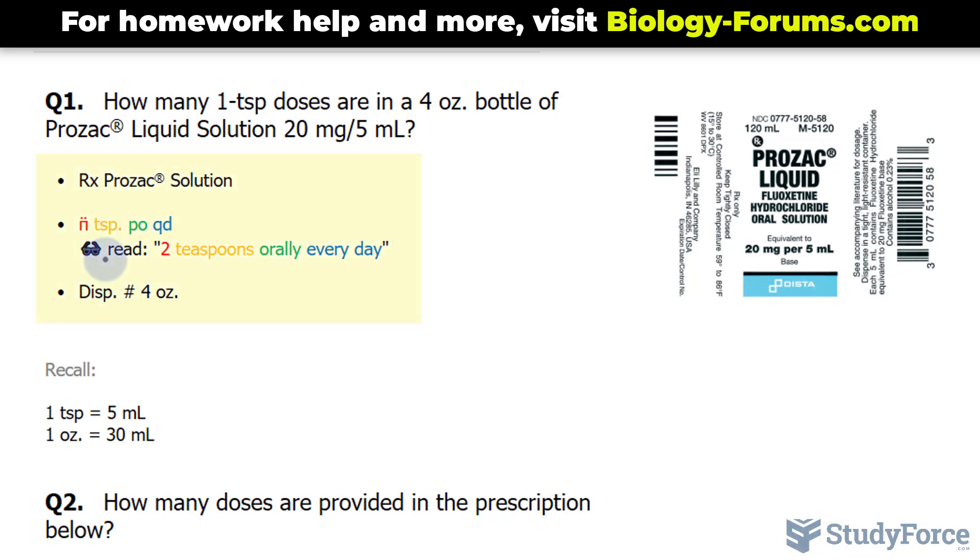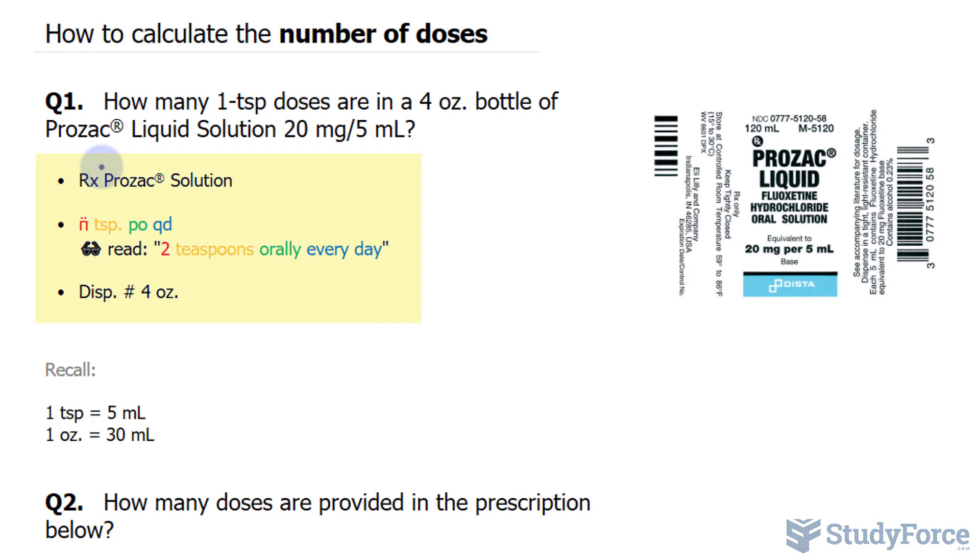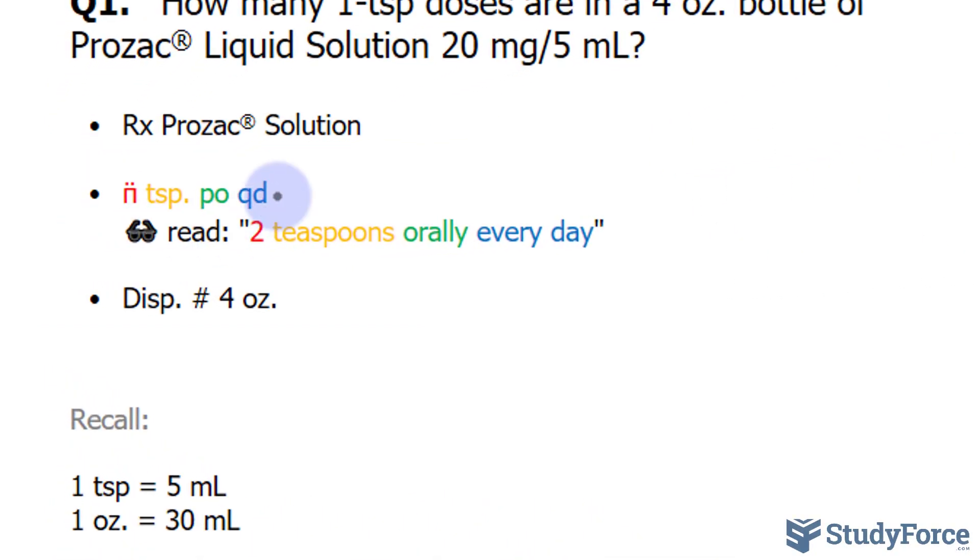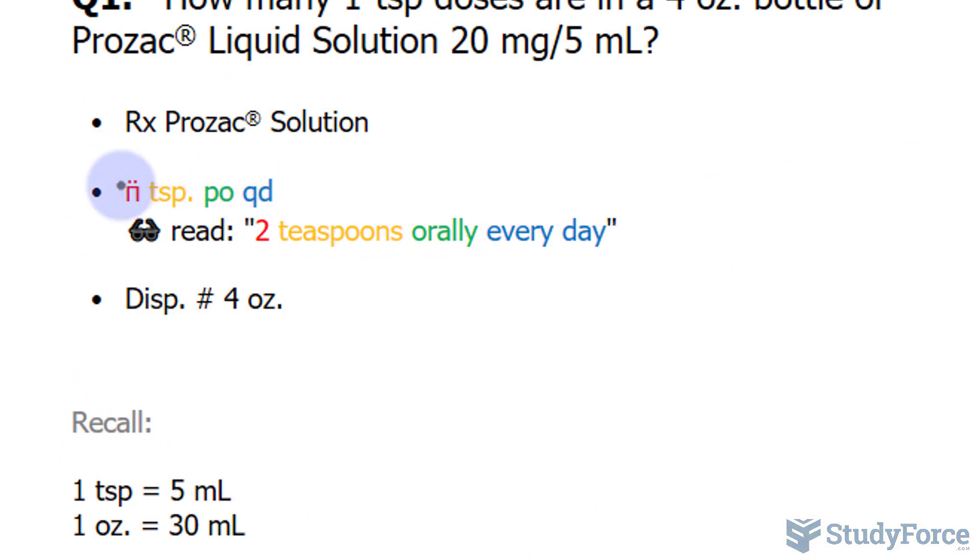We're also provided with this information, and depending on what the question is asking, what's being provided here may or may not be helpful to us. Just to give you an idea of how this is read, we have two teaspoons orally, PO is orally, and the QD represents every day.